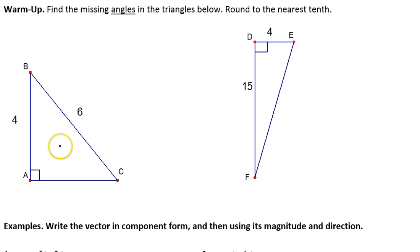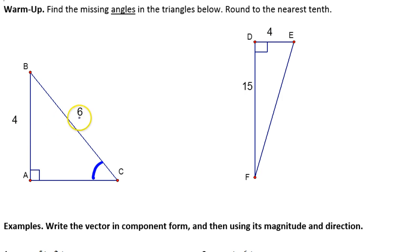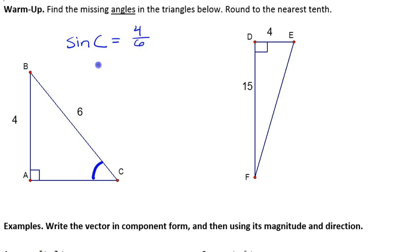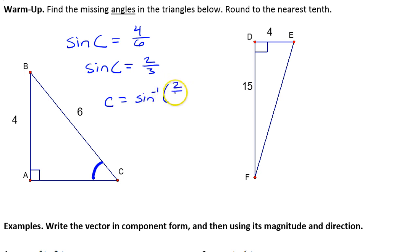For the first triangle, we have two missing angles, b and c. Let's go for angle c. From the perspective of angle c, the side with the 4 on it is opposite, and the 6 is the hypotenuse. Opposite over hypotenuse is the sine function, so the sine of angle c equals opposite over hypotenuse. Reducing, the sine of angle c is 2/3, and angle c itself equals the inverse sine of 2/3.